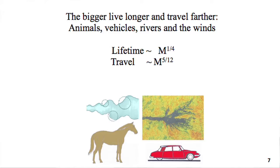Even better, the bigger should also live longer and travel farther during their lifetime. M is the body mass, the size. So the bigger live longer — the elephant lives a lot longer than the mouse — and should travel farther during their lifetime. This is true for everything that moves with freedom to morph, to move more and more easily for greater access. Not only the animals, but all of us. We are not just people — we are a human and machine evolving species. The rivers and the winds, the atmospheric currents — the bigger, the longer living and farther moving.